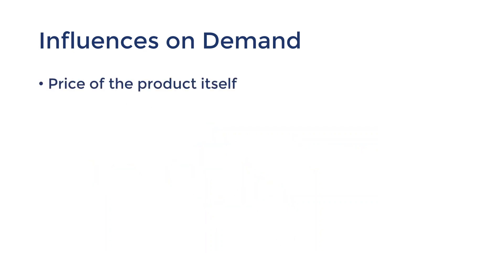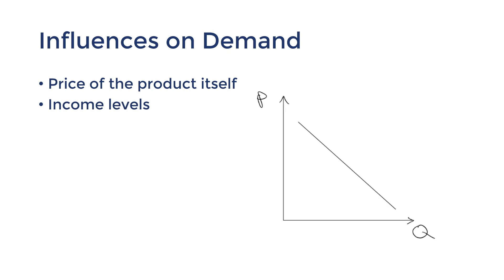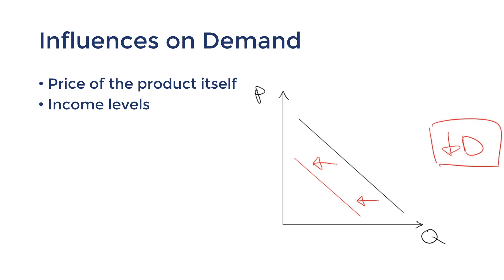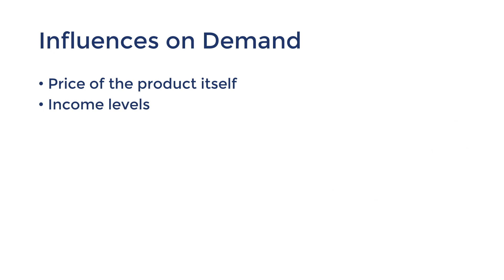One influence that can cause a shift in the demand curve is income levels in the market. If buyers experience an increase in income, they would be willing to buy a higher quantity for the same price, shown by the demand curve shifting to the right. If their incomes are falling, they would decrease their demand, shifting it to the left. Notice the language: this is called a shift, as opposed to a movement; increase or decrease, as opposed to expansion or contraction.